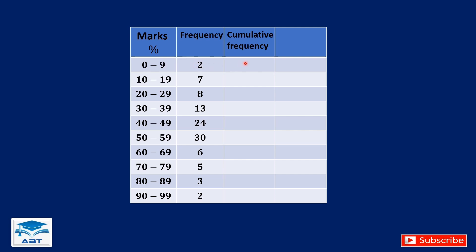We have the first frequency, 2, so we repeat it. And we add 2 to 7, that would be 9. 9 plus the next frequency, 8, will give us 17. 17 plus the next frequency, 13, will give us 30. And 30 plus 24 will give us 54. 54 plus the next frequency, 30, will give us 84. And 84 plus the next frequency, 6, is 90. 90 plus 5 is 95. And 95 plus the next frequency, 3, is 98. And 98 plus 2 is 100. So this is how we generate the cumulative frequency.